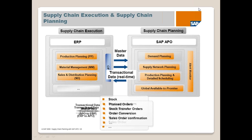The data flows from ECC to APO and planning results are sent back. This is done through the interface called the Core Interface, CIF. ECC is an SAP system and APO is an SAP system, and to integrate these two systems, SAP provides the standard integration called the Core Interface. Based on this Core Interface, data can be accessed from ECC to APO and from APO back to ECC.